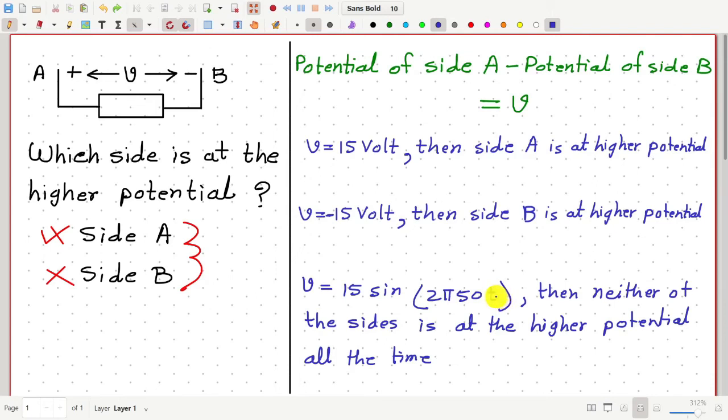...then neither side A nor side B is always at the higher potential. This function sine changes from plus to minus and from minus to plus alternatively as time changes. And therefore, side A and side B reaches the higher potential alternatively.